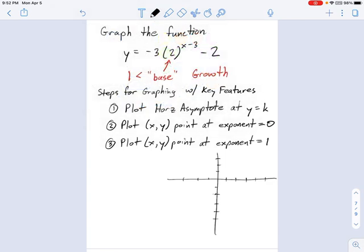So let's plot this exponential growth function. And here are the steps I'm going to follow. We're going to plot the horizontal asymptote, which is always at y equals k. There's k right there, that negative 2. So step 1 is easy. We just say horizontal asymptote, y equals negative 2. So we come along to this graph here. I'm going to put this horizontal asymptote right here at y equals negative 2. So that's done.